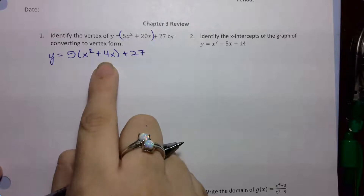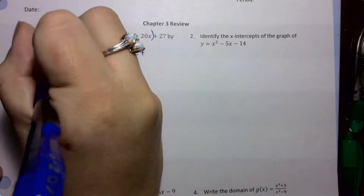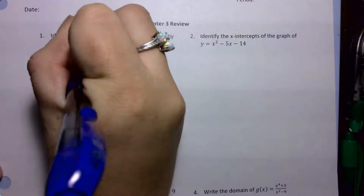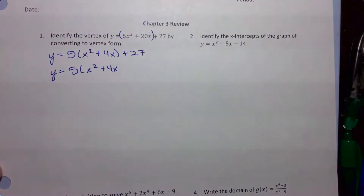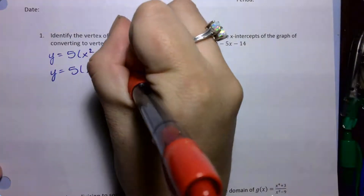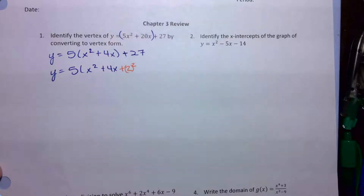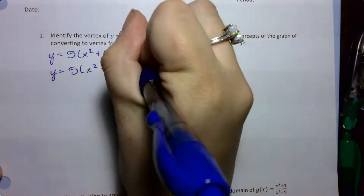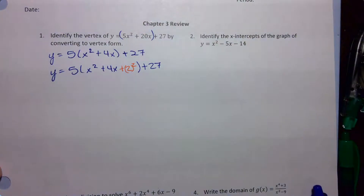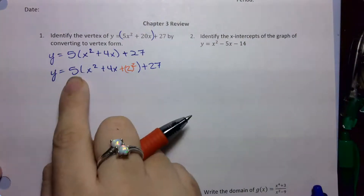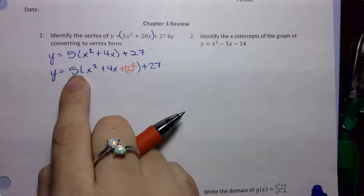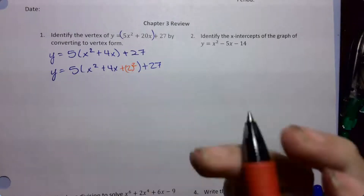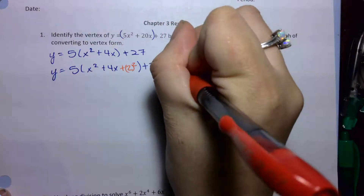I want to find half of that value and square it. So I have 5 times x squared plus 4x. Half of 4 is 2, so I want to add 2 squared inside the parentheses. I still have that 27 from before outside, and then I need to do the opposite sign of the 5 because I'm only working with one side of the equation. So I need to cancel out this extra 2 squared I added, so I'm going to subtract 5 times 2 squared.